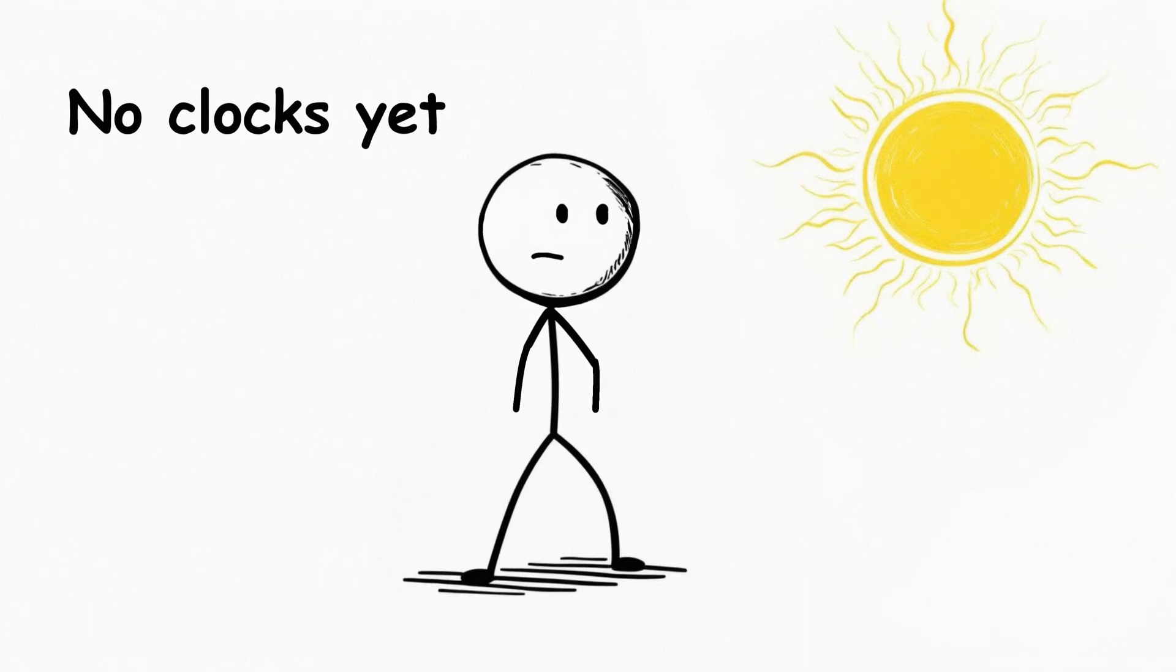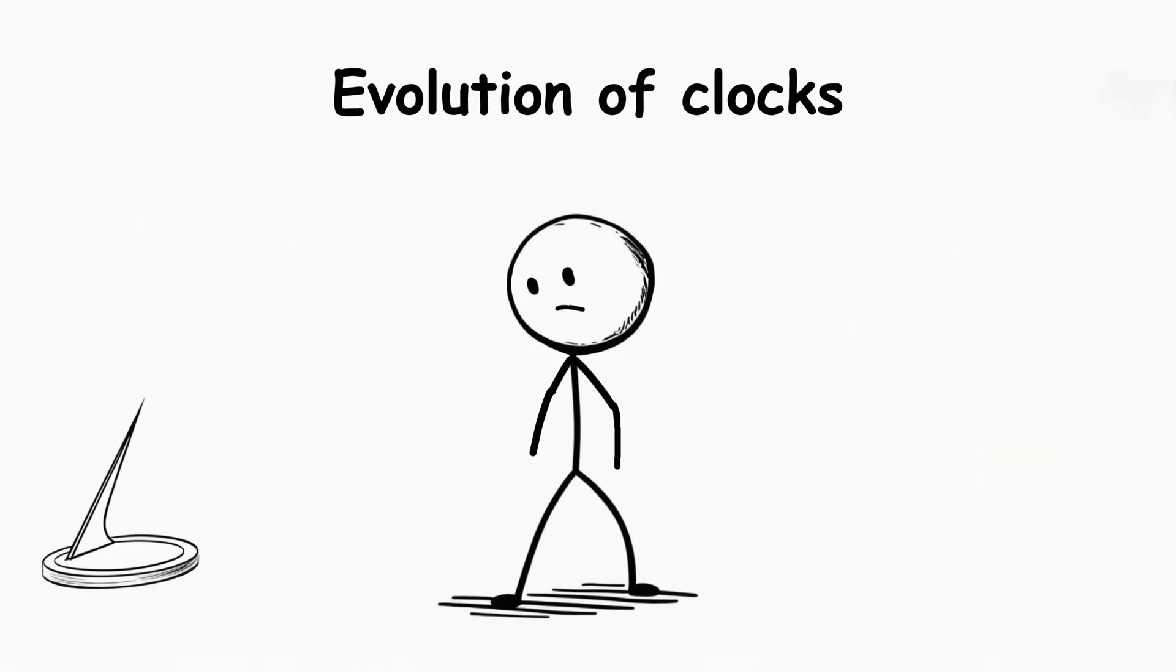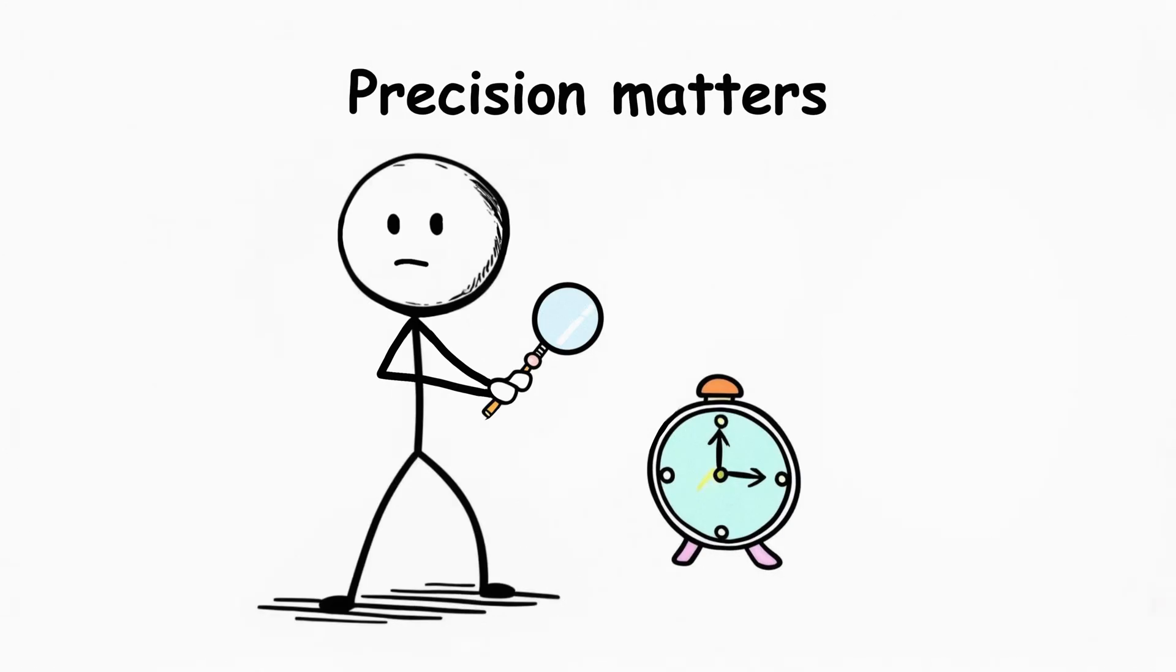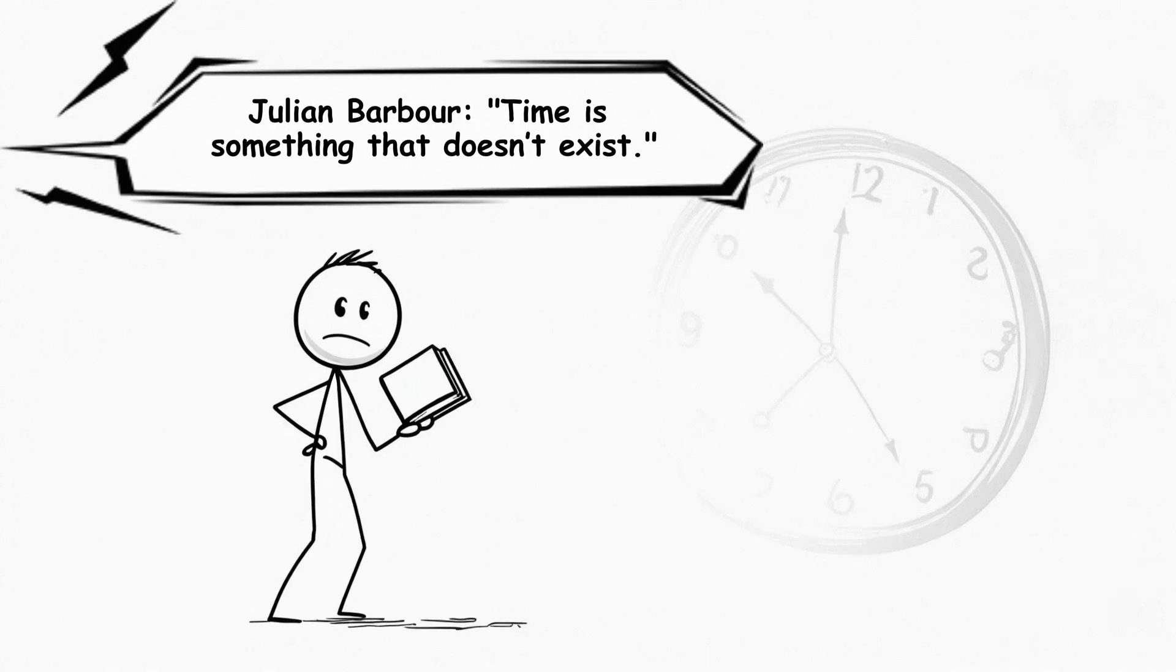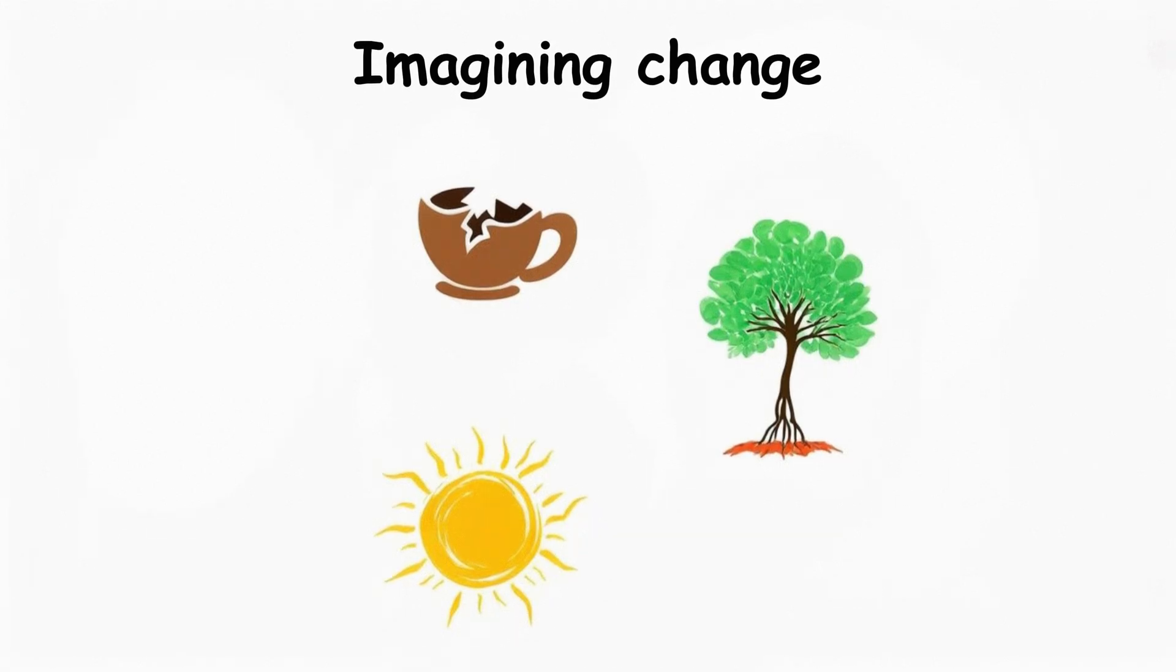In ancient times, there were no clocks. People tracked the change of seasons, the positions of the stars. Later came sundials, hourglasses, mechanical clocks, atomic clocks. The more precise the instrument, the more precise the measurement. But measurement of what exactly? Physicist Julian Barbour argues time is something that doesn't exist. It is what we imagine in order to describe changes more easily.